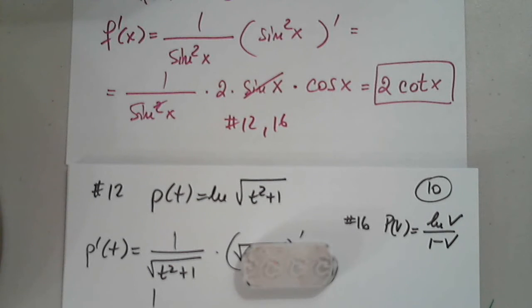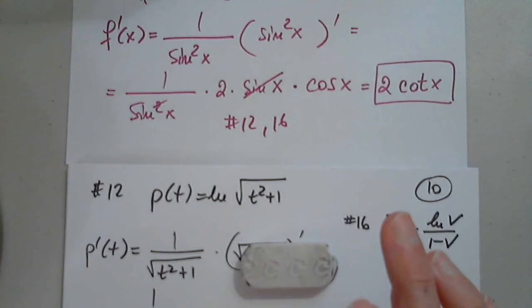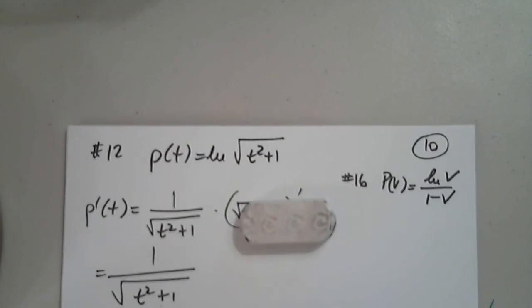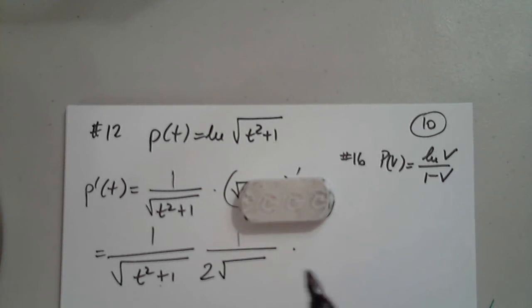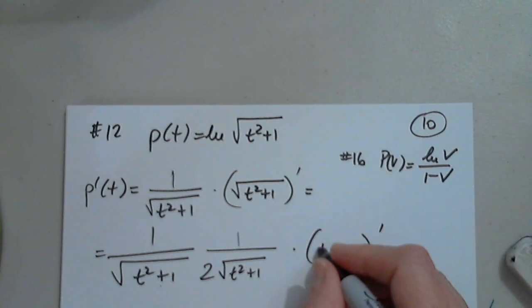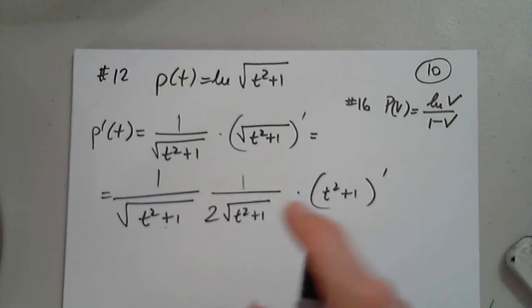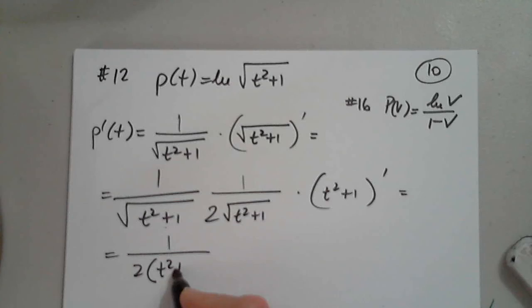Pull down the exponent. We have a shortcut for the square root: 1 over 2 times the square root times the inner function prime. So it's 1 over the square root of t squared plus 1, times 1 over 2 times the square root of t squared plus 1, times t squared plus 1 prime.